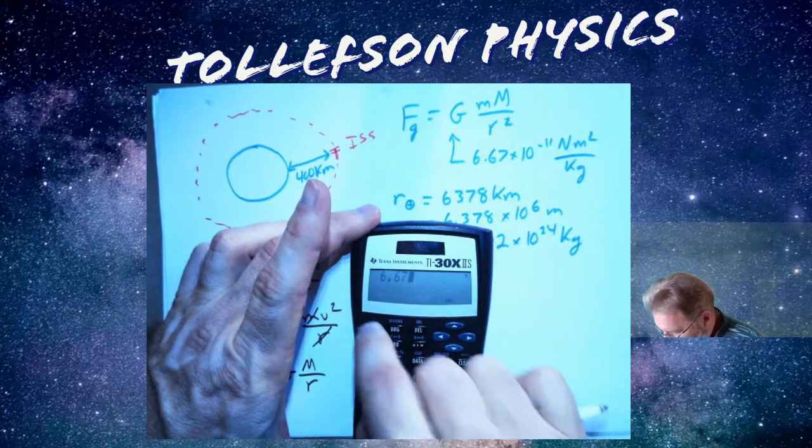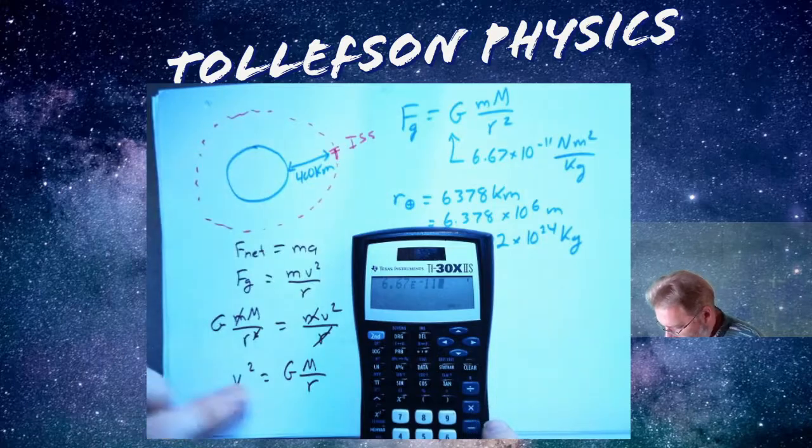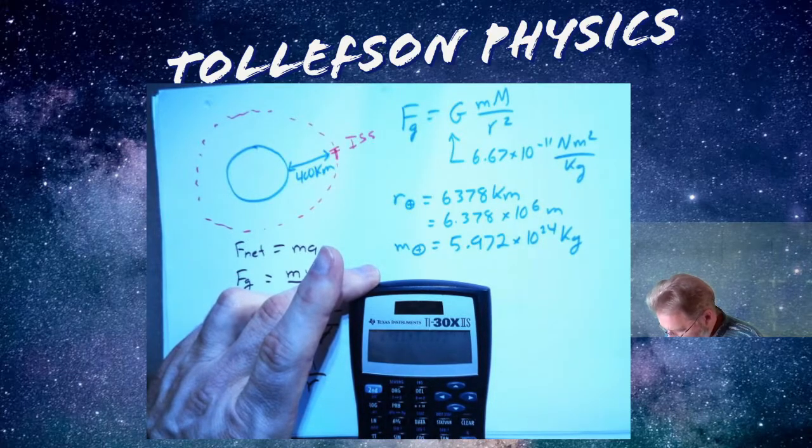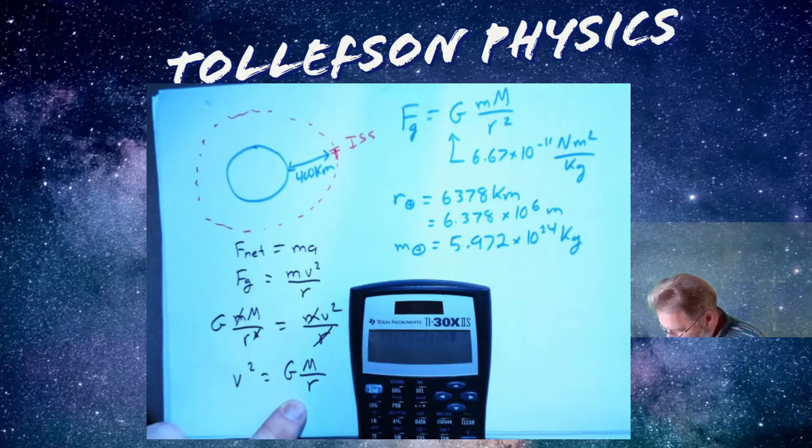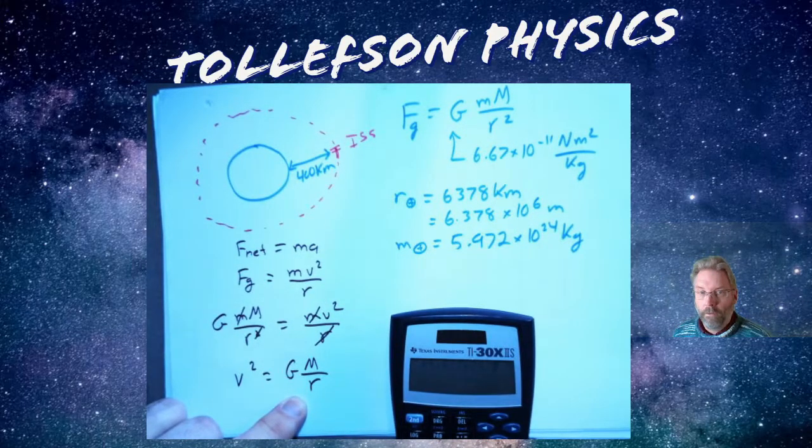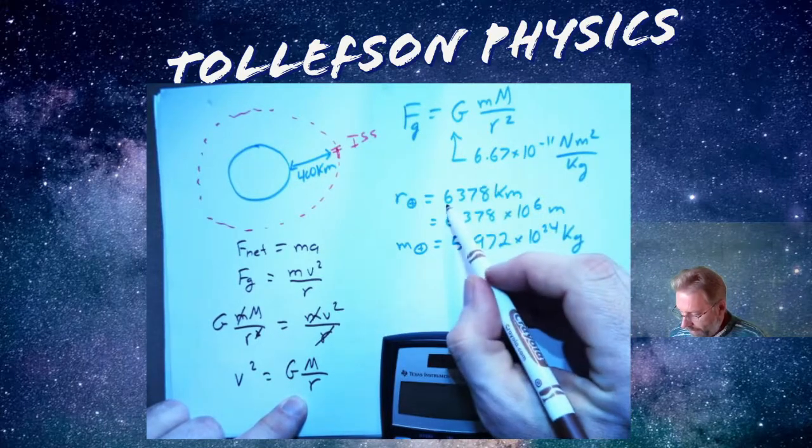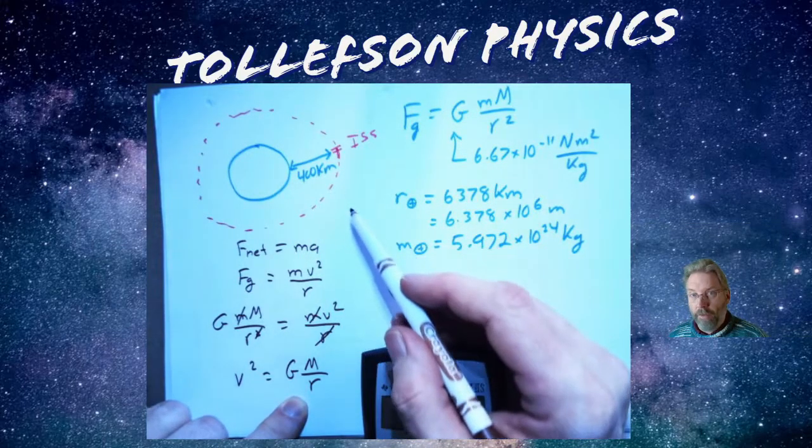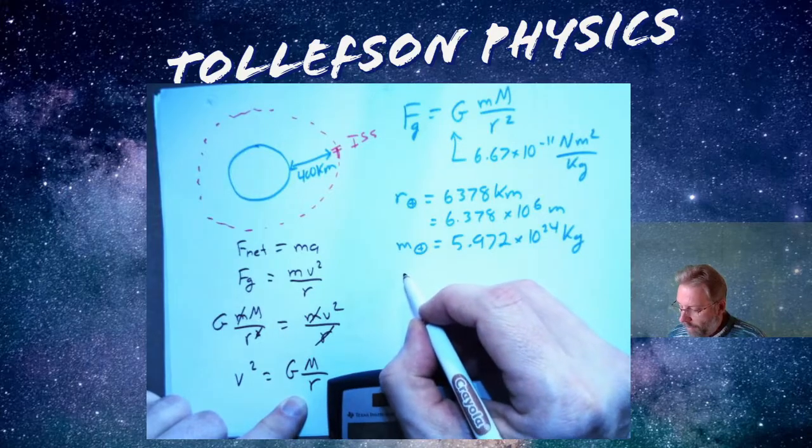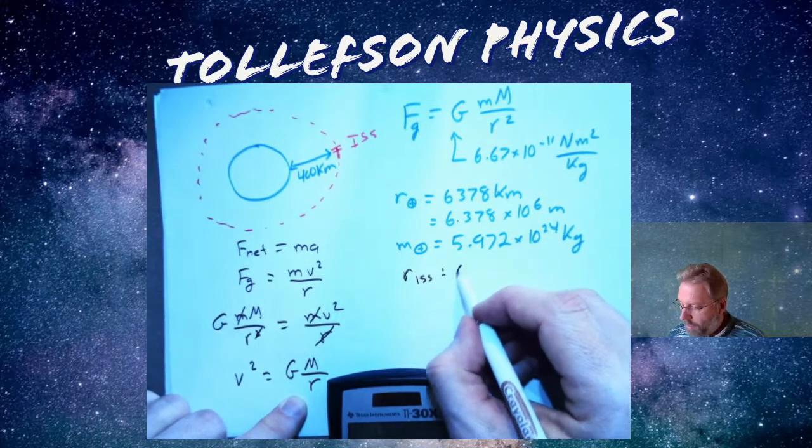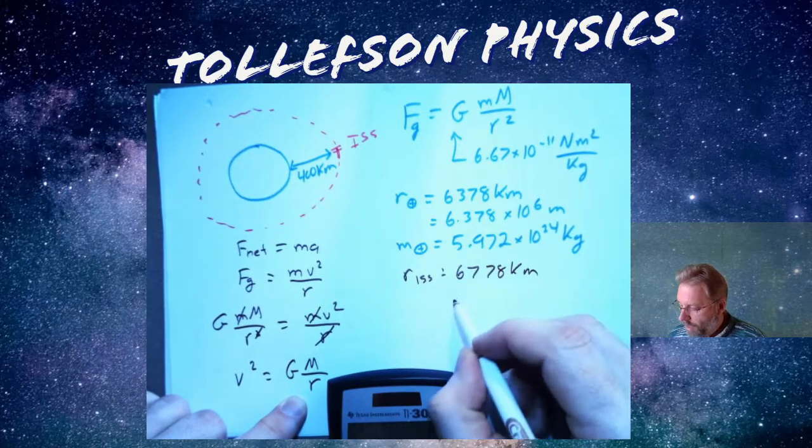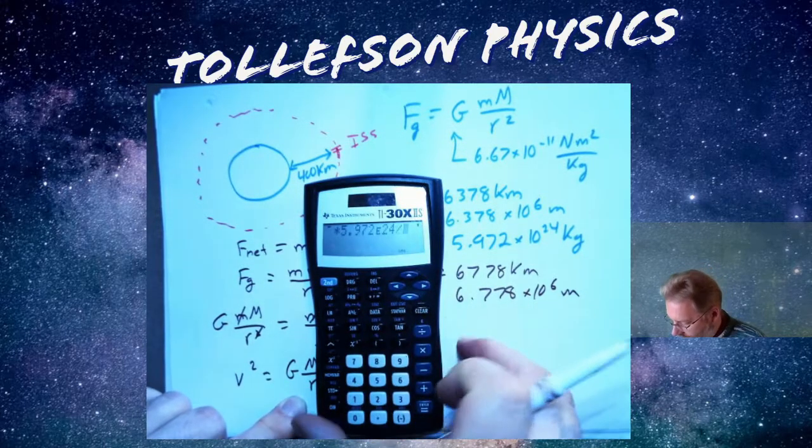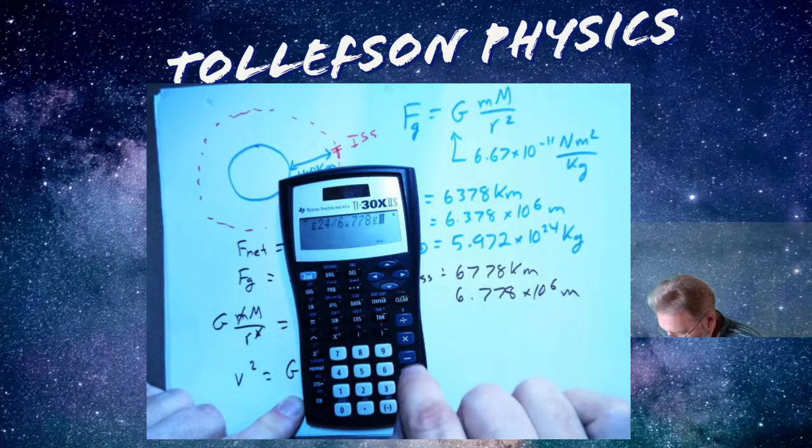I'm going to do 6.67 times 10 to the negative 11. And then I'm going to multiply it by the mass of the Earth, 5.972 times 10 to the 24. And then I'm going to divide it by the radius. We got to be careful about the radius. The radius of the Earth is 6,378 kilometers. The height above the Earth is another 400. So really, the r for the ISS is going to be 6,778 kilometers, which is 6.778 times 10 to the 6 meters.